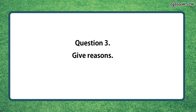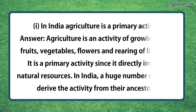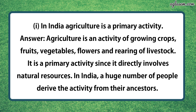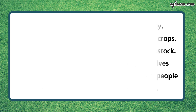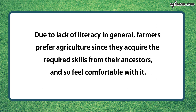Question number three says, give reasons. First part says, in India, agriculture is a primary activity. So the answer is, agriculture is an activity of growing crops, fruits, vegetables, flowers and rearing of livestock. It is a primary activity since it directly involves natural resources. In India, a huge number of people derive the activity from their ancestors. Due to lack of literacy in general, farmers prefer agriculture since they acquired the required skills from their ancestors and so feel comfortable with it.